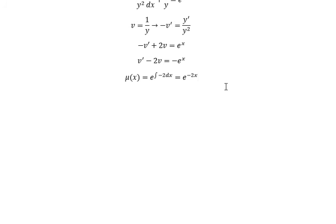We multiply both sides with e to the power of negative 2x. Then we put the integral for both sides.